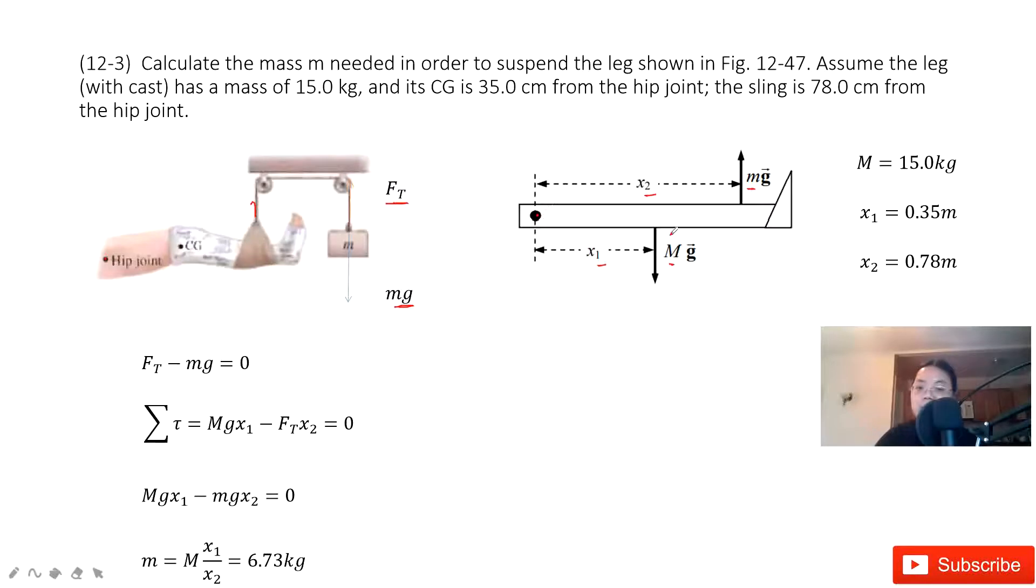First, we can see we have the mg pointing down. So use your four fingers pointing down and rotate with x1's direction. The axis is pointing in, pointing in.